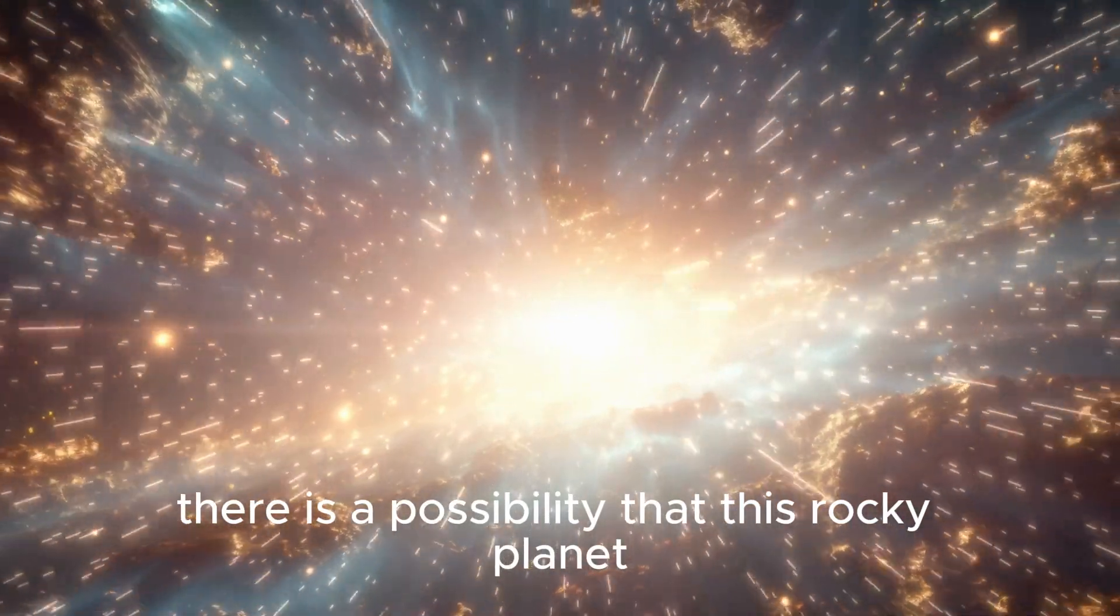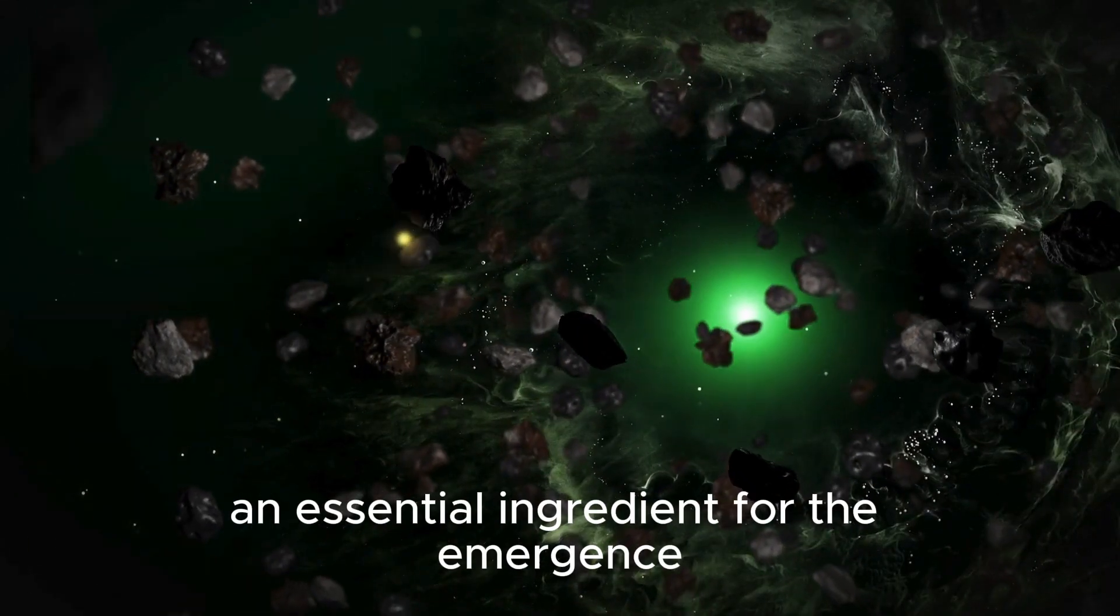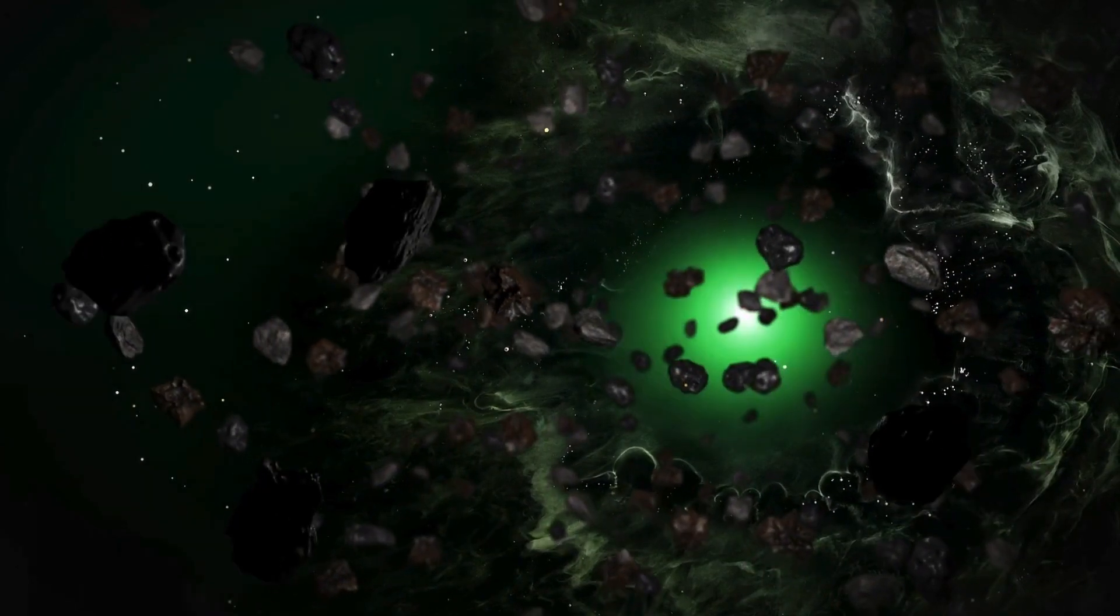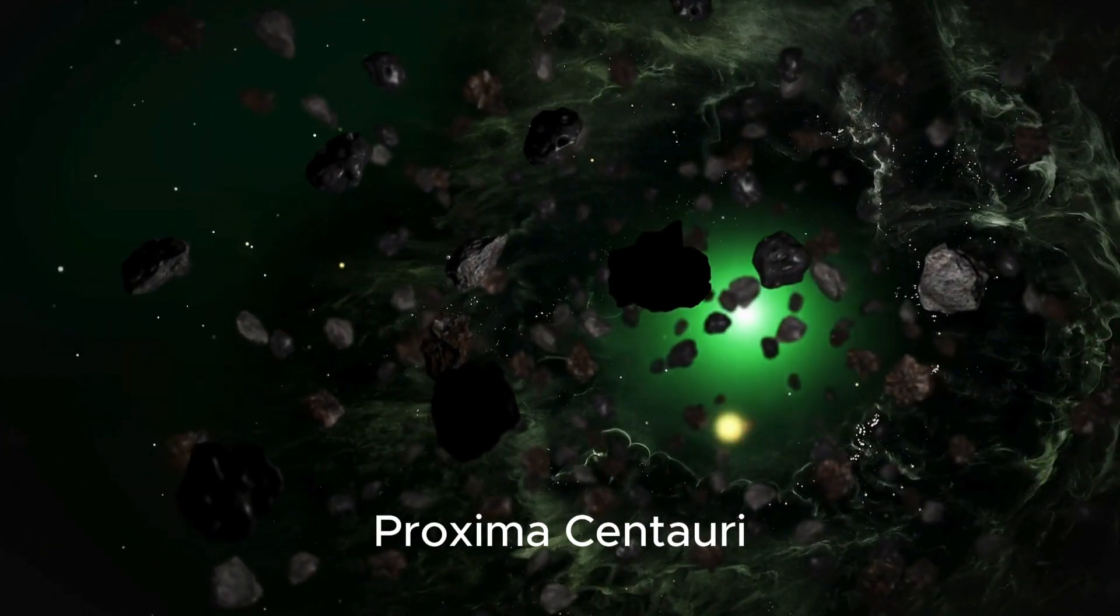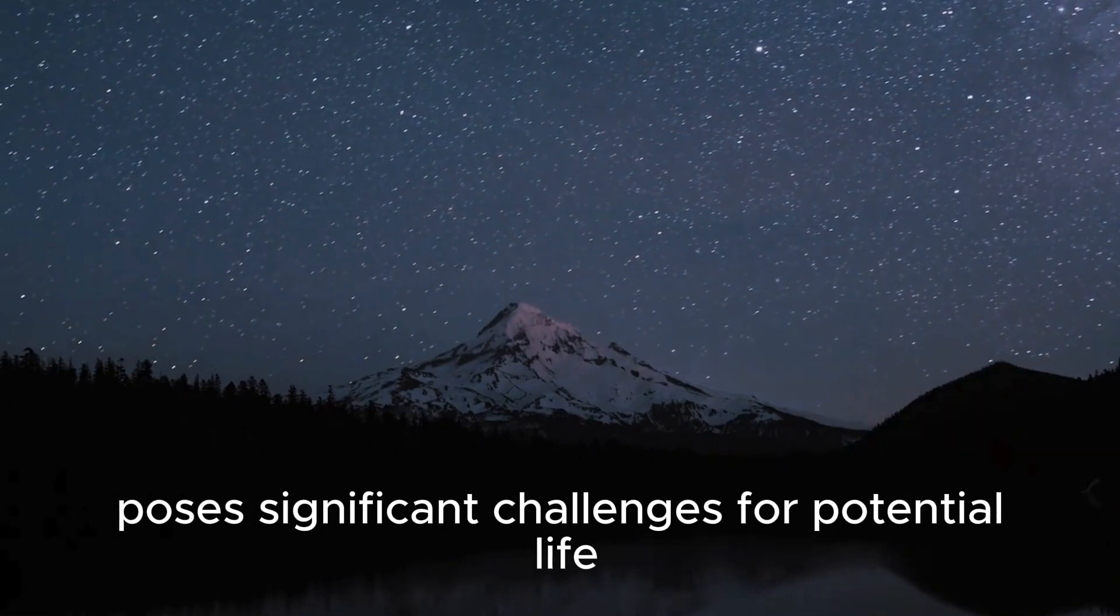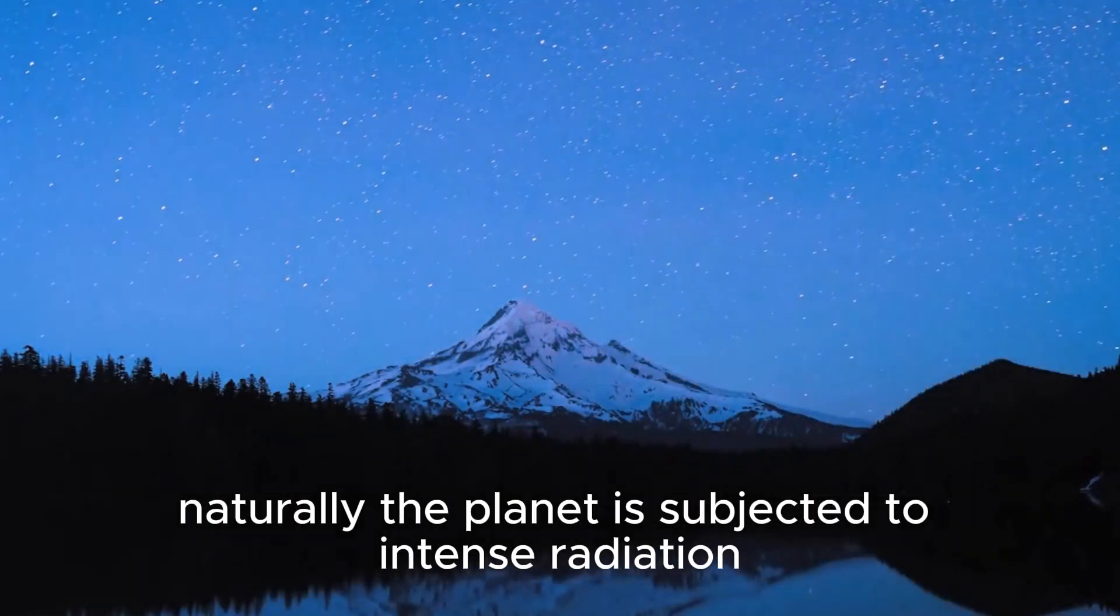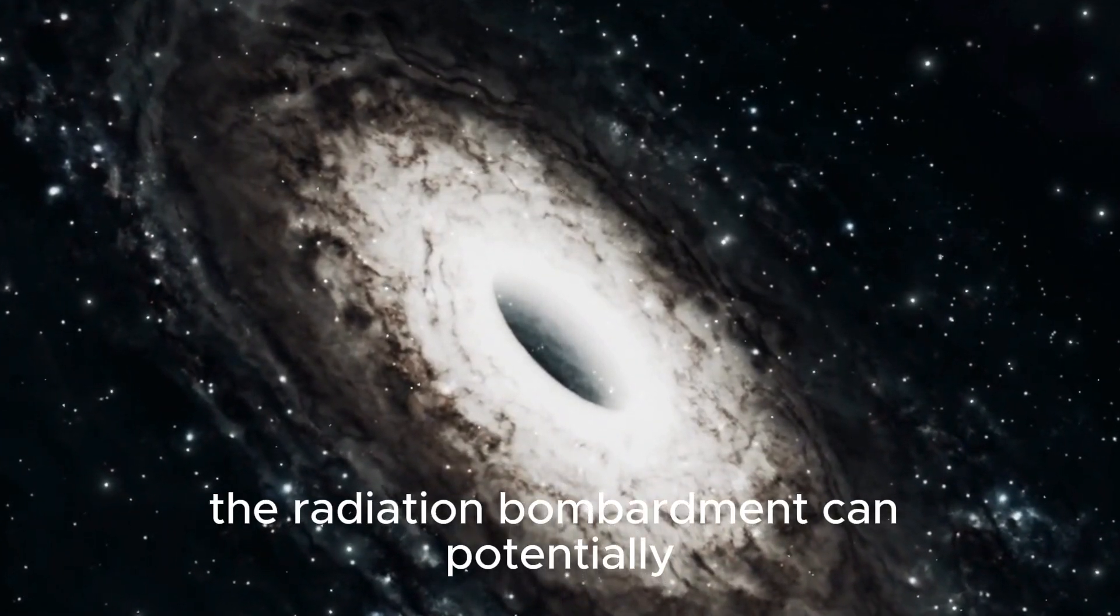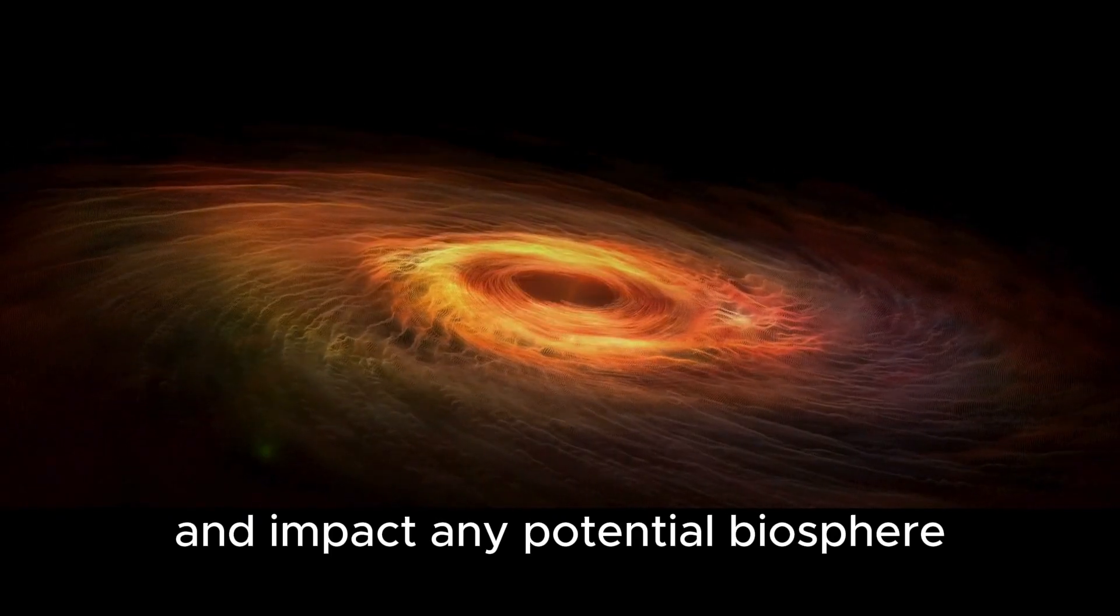There is a possibility that this rocky planet may house conditions suitable for liquid water, an essential ingredient for the emergence and sustenance of life as we know it. Of course, the proximity of Proxima b to its parent star Proxima Centauri poses significant challenges for potential life on this exoplanet. Naturally, the planet is subjected to intense radiation from its star.